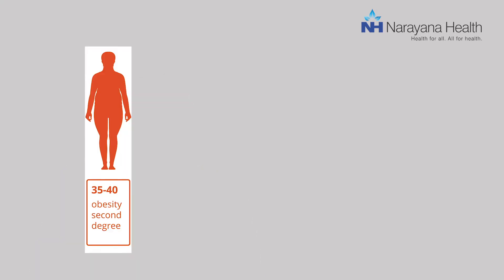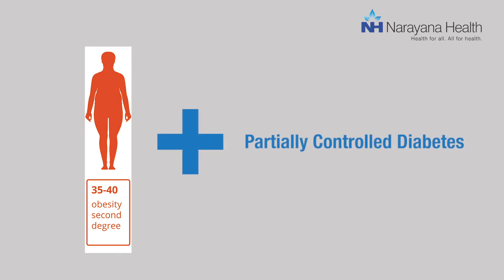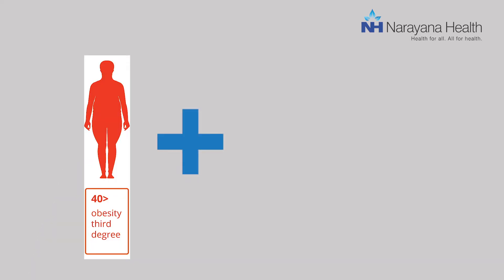The next category is patients who have a BMI of 35 to 40 with partially controlled diabetes mellitus, and patients who have a BMI of 40 plus — even if they have well-controlled diabetes on medicines — are candidates because diabetes in such patients can be completely reversed.